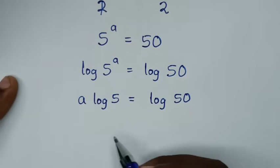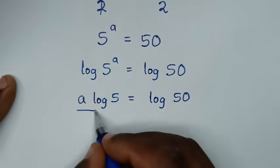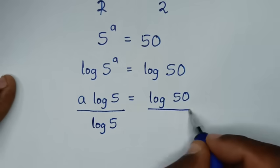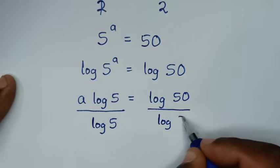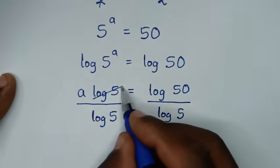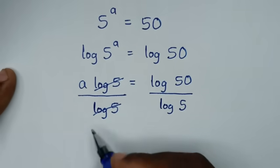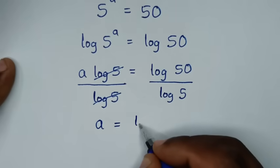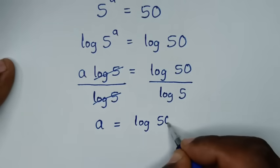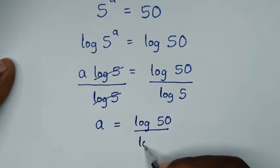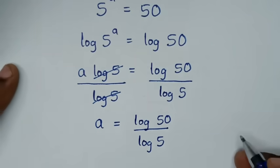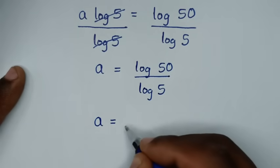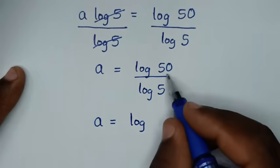Then we'll divide by log of 5 on both sides, so this and this will cancel, then it will be a is equal to log of 50 over log of 5.